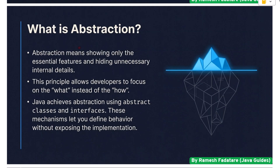What is abstraction? Abstraction means showing only the essential features and hiding unnecessary internal details. This principle allows developers to focus on the 'what' instead of the 'how.' Java achieves abstraction using abstract classes and interfaces — these mechanisms let you define behavior without exposing the implementation.